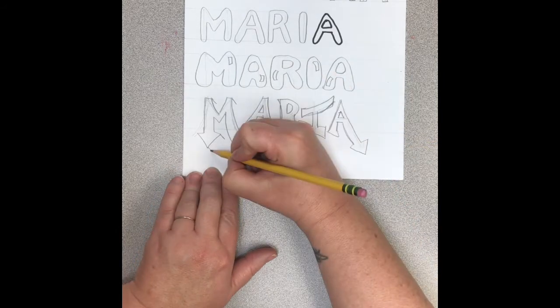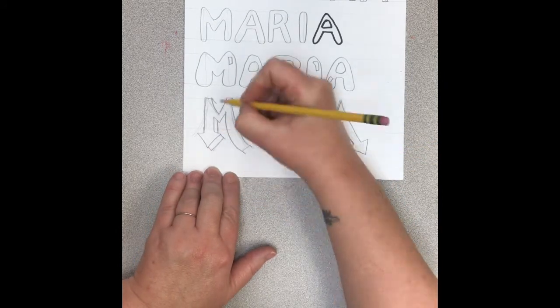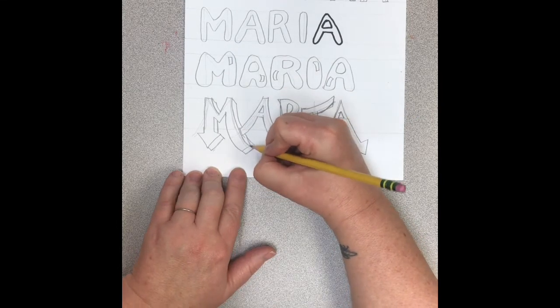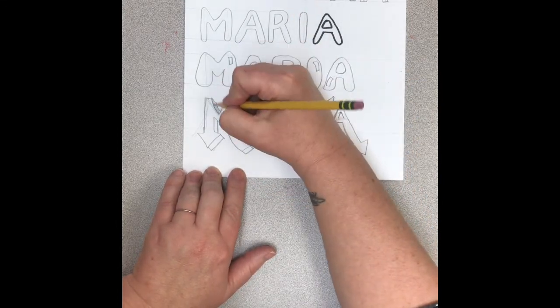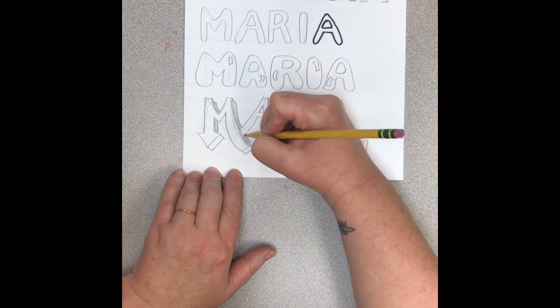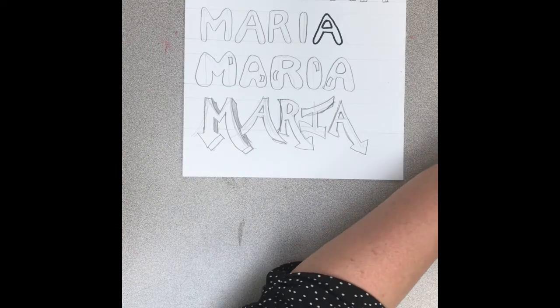If I want my letter to look three dimensional I can just make a little angled tip at the corner on one side of each letter and then connect those together with a line. If I shade them in it starts to make my letter look like a form so it's three dimensional.